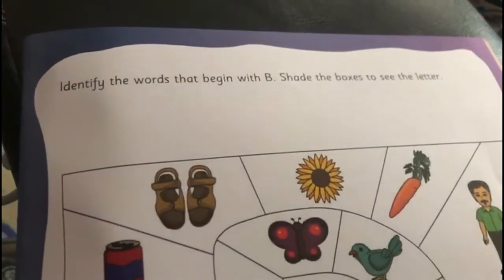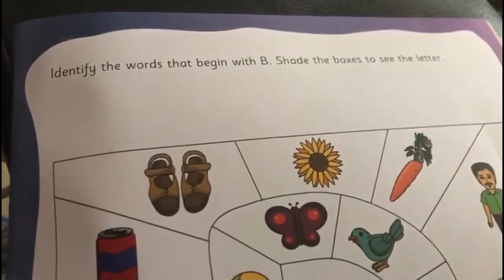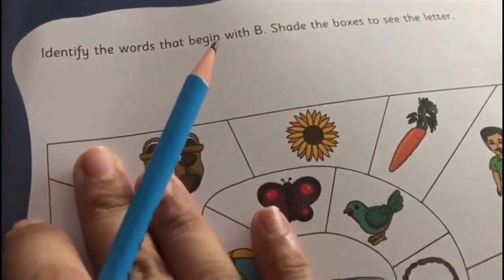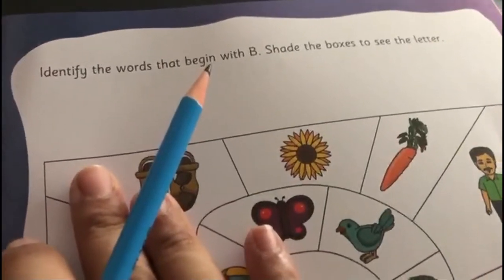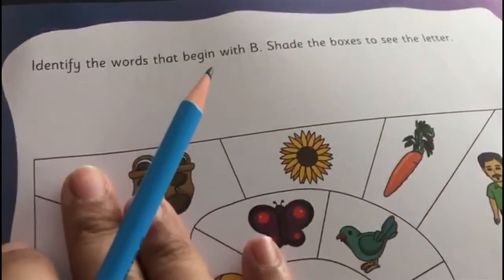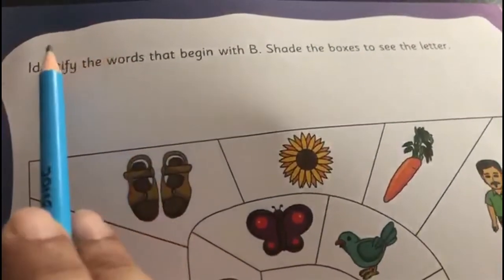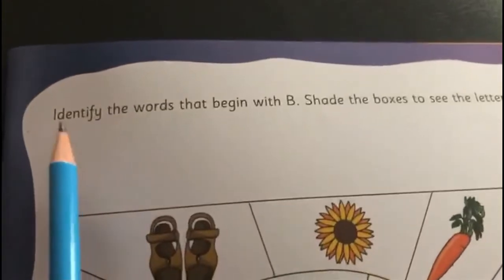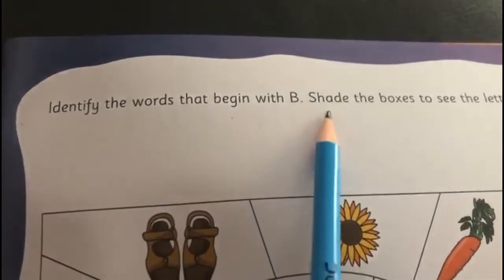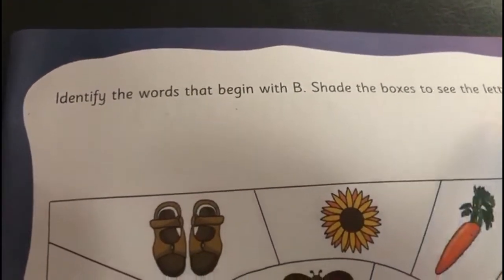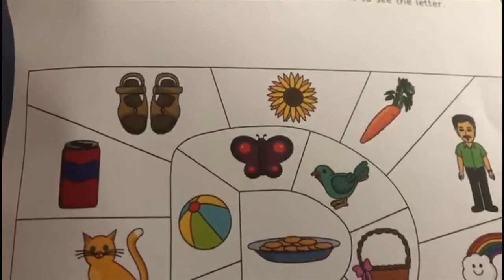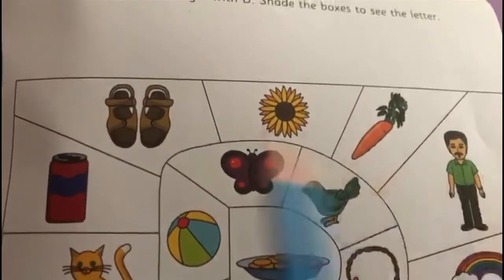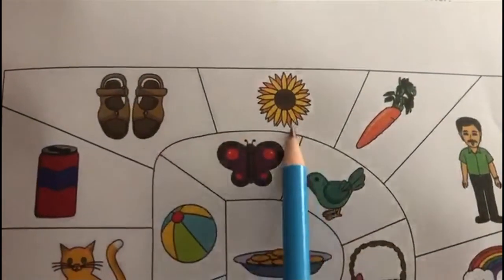Now children, moving to the next page in your memories book — page number seventeen. Dear parents, kindly assist the child in opening the page and write today's date on top. Now children, let me read: identify the words that begin with B and shade the box to see the letter. We are going to do the same thing we did with letter T. Let's start — sandals, sunflower, carrot, man...